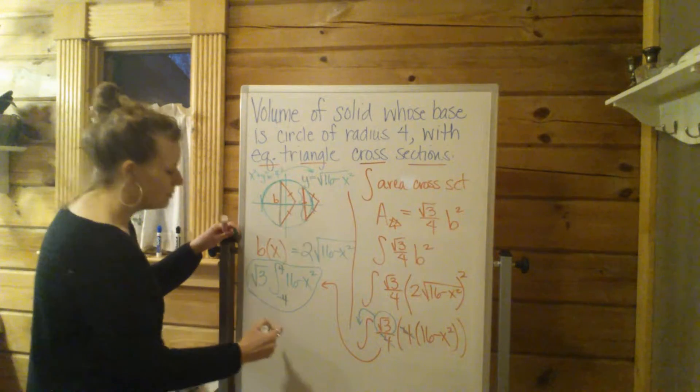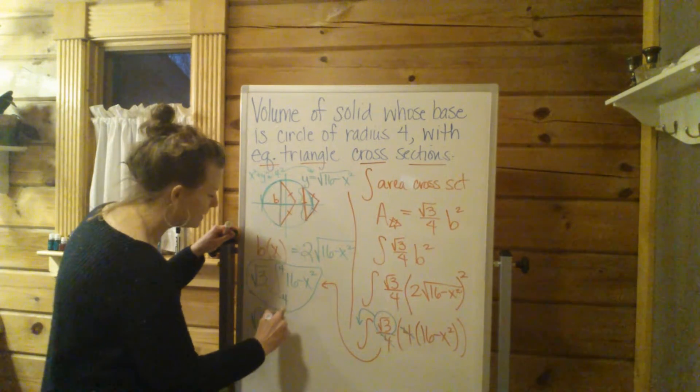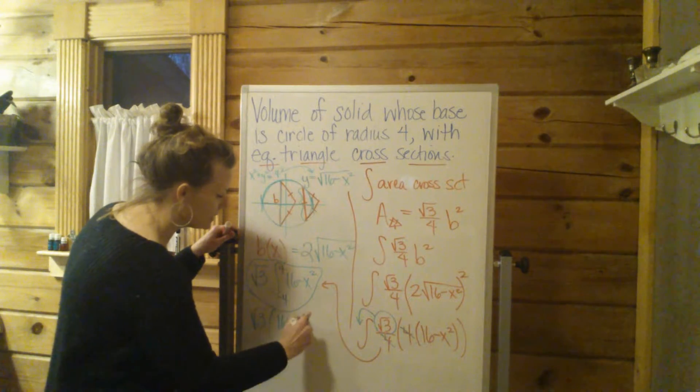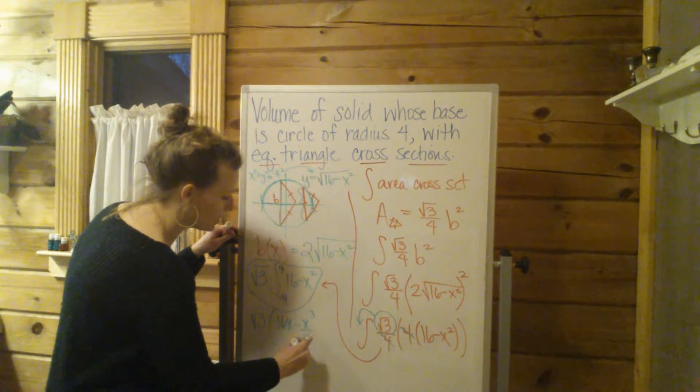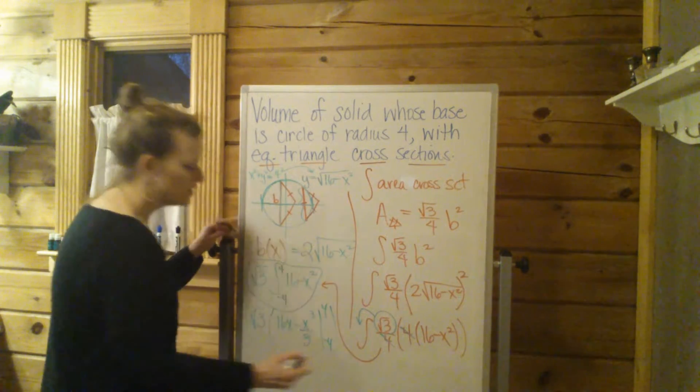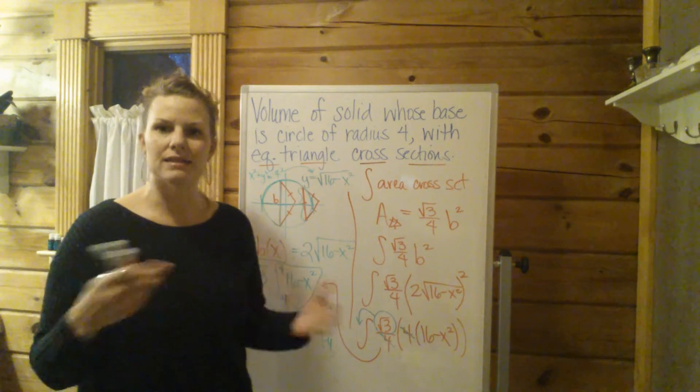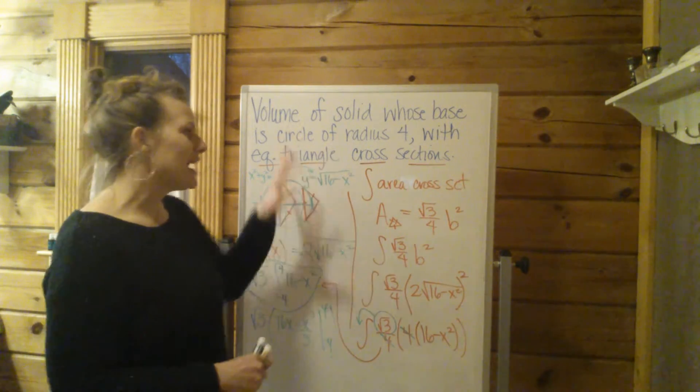That's going to be the integral that you go on from and you solve. I believe, so integration, square root of 3 just sits there. But that's going to be 16x minus x cubed over 3. Then you plug in the 4 and the negative 4 and so on and so forth. So I'm going to let you do the integration and basically just the arithmetic, but that's the setup.